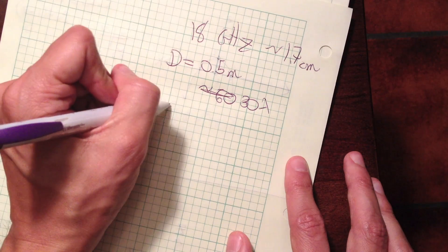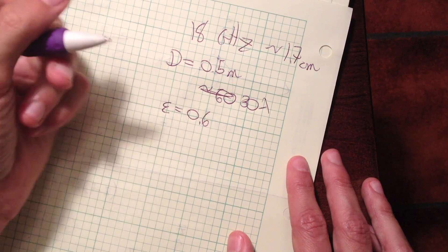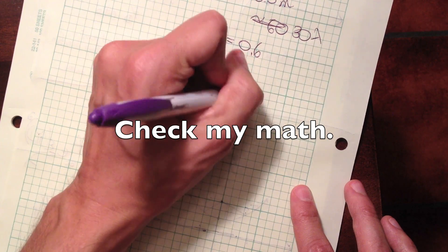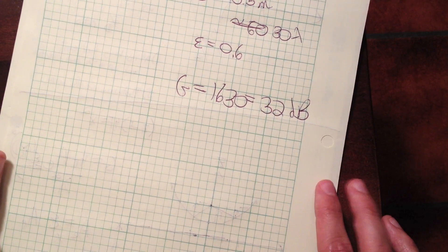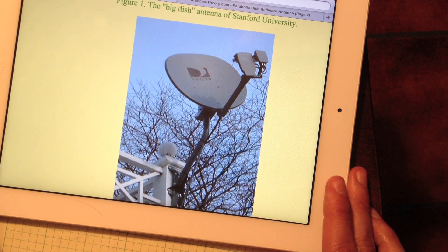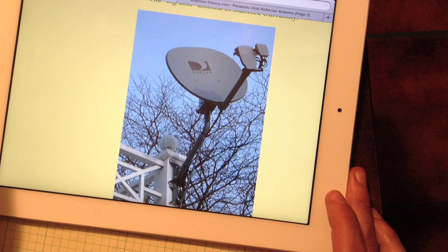So if we assume like a reasonable aperture efficiency, let's call it 0.6, then we can calculate the gain from this equation, and we end up with a gain of 1630, or 32 dB. So that small satellite dish antenna actually has a gain of 30 dB, and the reason is because the frequency is so high.